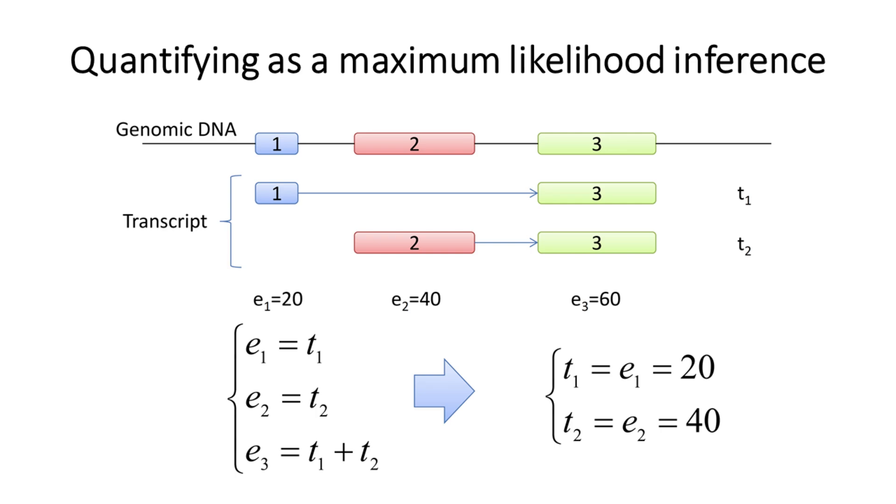Then we can directly infer from the transcript structure the relationship between transcript expression levels and exon expression levels. For example, exon 1 is only present in transcript 1, so all its expression is contributed by transcript 1. Similarly, exon 3 is present both in transcript 1 and in transcript 2, so its expression is contributed by both transcripts. Therefore, we think that the expression level of exon 1 is the expression level of transcript 1, while the expression level of exon 3 is the sum of expression levels of transcript 1 and transcript 2. We can then infer that the expression levels of transcript 1 and transcript 2 are 20 and 40, respectively.